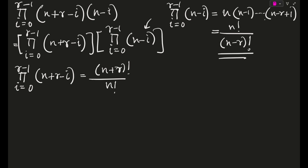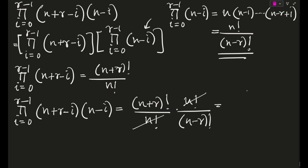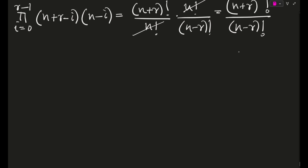I'm not going into expanding this in full detail — just expand it in a similar way and you will see it comes to (n+r)! / n!. So combining the two pi results: pi from i=0 to r−1 of (n+r−i)·(n−i) equals [(n+r)! / n!] · [n! / (n−r)!]. The n! cancels, giving us (n+r)! / (n−r)! — pretty interesting. That is the final result for the multiplicative term.